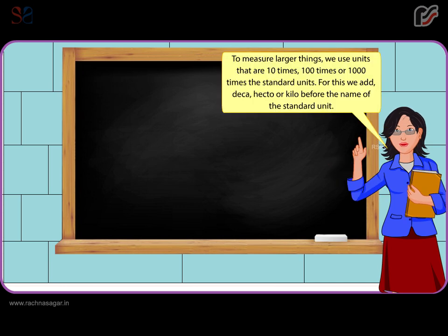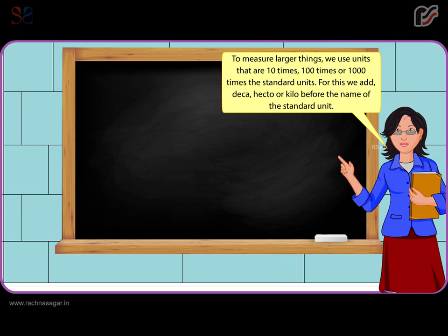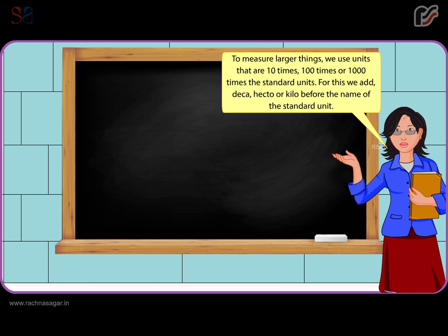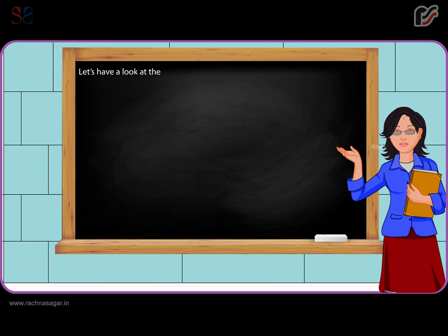To measure larger things, we use units that are 10 times, 100 times, or 1000 times the standard units. For this, we add Deka, Hecto, or Kilo before the name of the standard unit. Let's have a look at the different units of length, weight, and capacity.